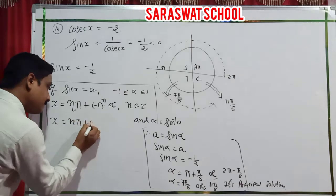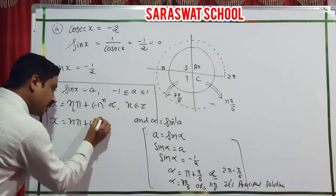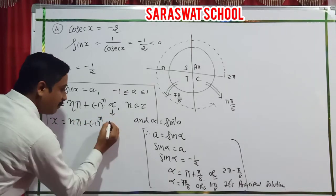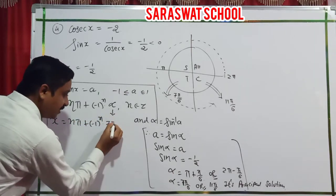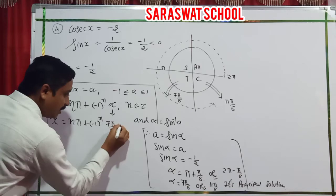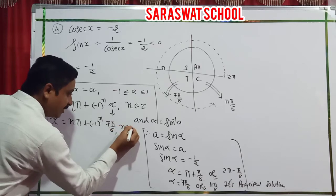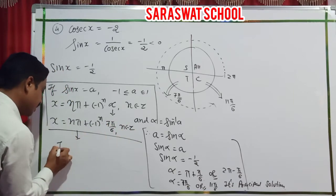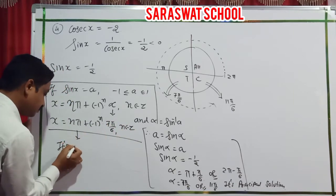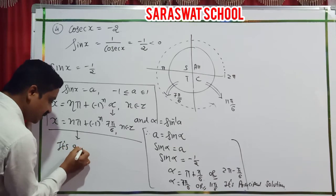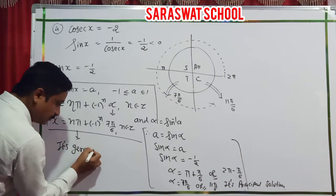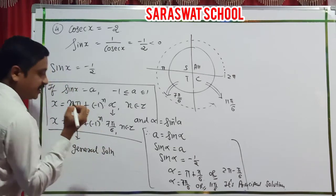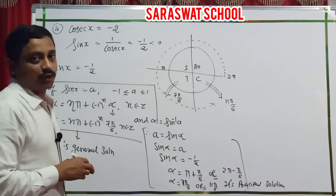That is our general solution. If you rotate infinitely — second rotation, third rotation — one by one you get more values. Clockwise rotation uses negative n values. You must draw the ASTC figure for these problems. Question 4 is happily done.